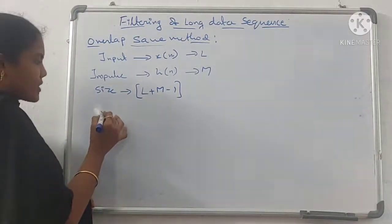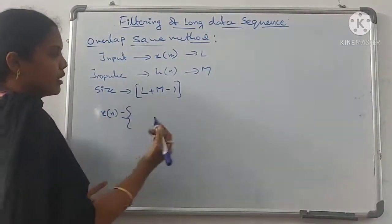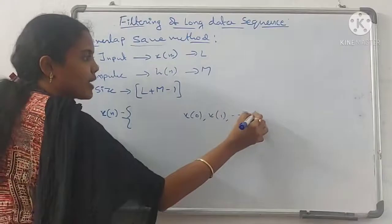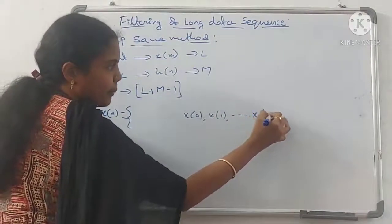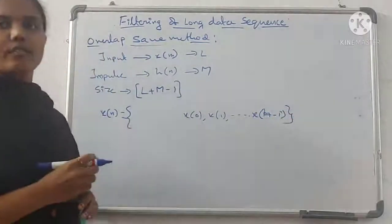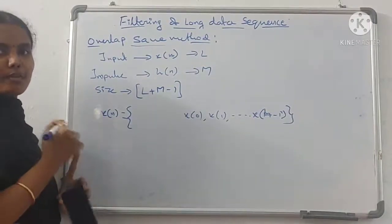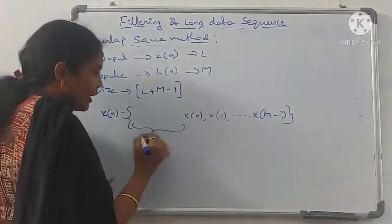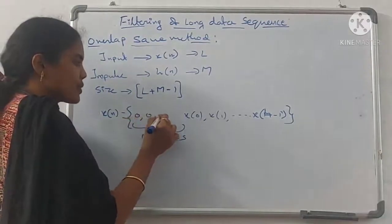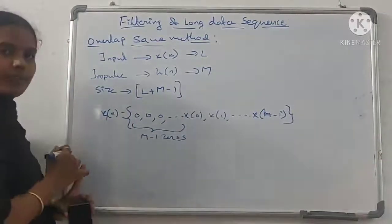Taking x(n), we have x(0), x(1), and so on up to x(L minus 1). This is one block of data. The first step is to add M minus 1 zeros — that is, 0, 0, and so on. This forms x1(n), the first block of data.